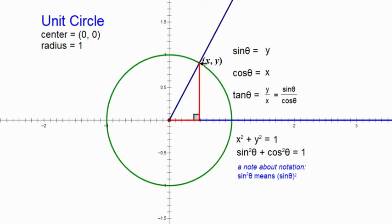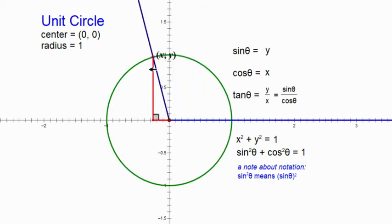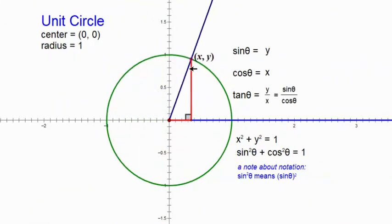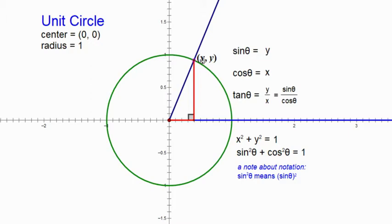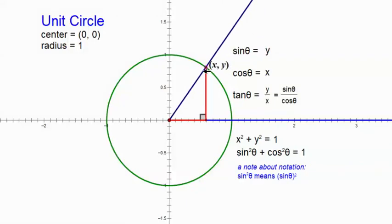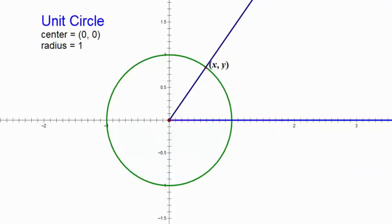So, for any angle at all: if you look at the point where that angle intersects the unit circle, the x-coordinate gives you the cosine, the y-coordinate gives you the sine, y divided by x gives you the tangent, and sine squared plus cosine squared always equals 1.